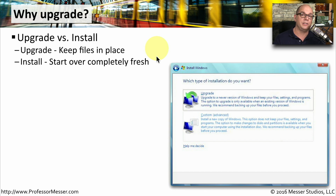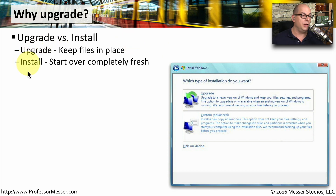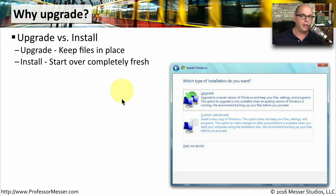Sometimes the operating system that you're moving to doesn't have a way to upgrade from the current version that you're running. So in that case, you may have to perform an install, which means you're starting over completely fresh, installing a brand new version of an operating system. You're usually backing up your old information, performing the install, and then restoring your data onto the new operating system.